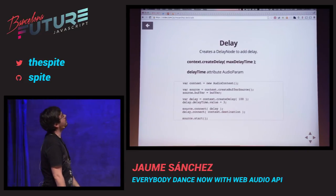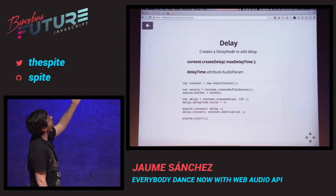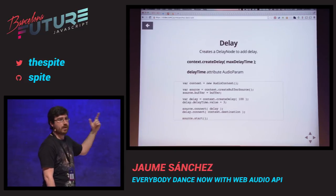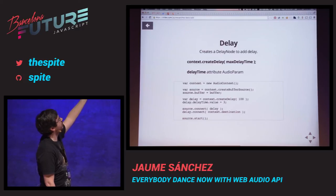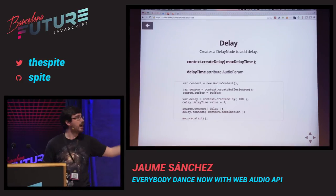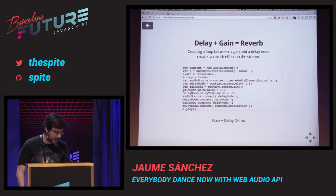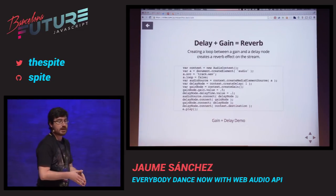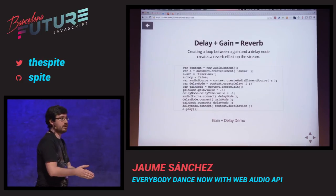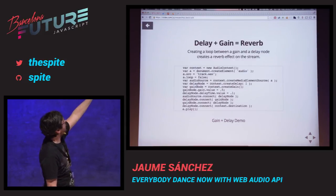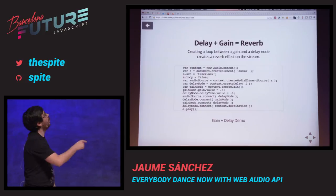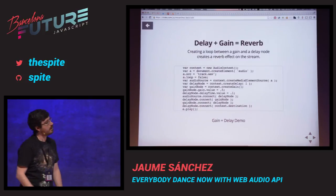There's another node — the delay node — it adds a delay, conveniently. You create it with context.createDelay(), specify the maximum delay time that node can process, then assign it with delayTime, which is an AudioParam. You can create a very easy and cheap reverb effect by connecting your buffer source to a feedback loop between the delay and gain nodes. The audio source is connected to the delay node, the delay node to the gain node, and the gain node back to the delay node. The delay node is also connected to the context destination. This creates a feedback loop attenuating the value, so you get an echo reverb effect.